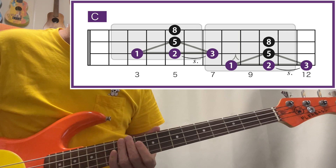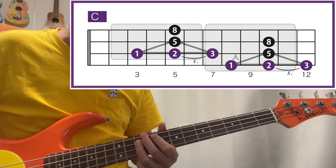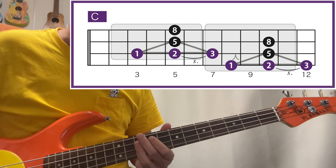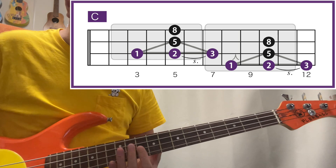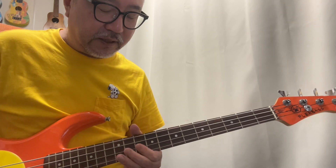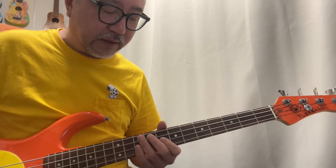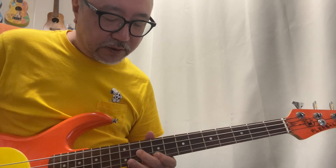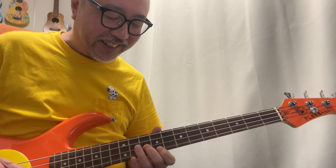スライドで2から3に行くとか、3から2に行って1に行くとか、そういう経過音としての使い方もある。1度、2度、1度。むずかった。